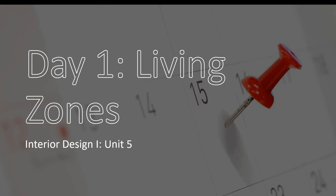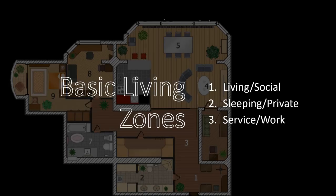In today's lesson, we'll be discussing the different living zones within your space. There are three: a living/social zone, a sleeping/private zone, and a service/work zone. It does not matter what size of space you have — you will have these three zones. A 7,000 square foot mansion and a 300 square foot studio apartment both have these three zones, just at very different scales. Let's go over how we break up these zones and what rooms belong in each.